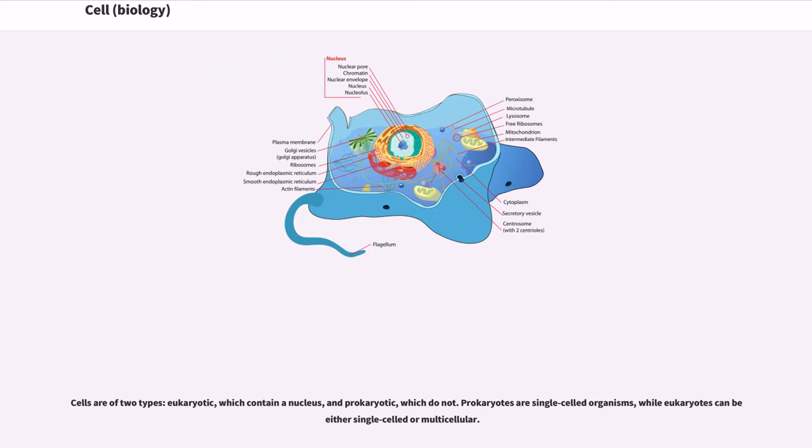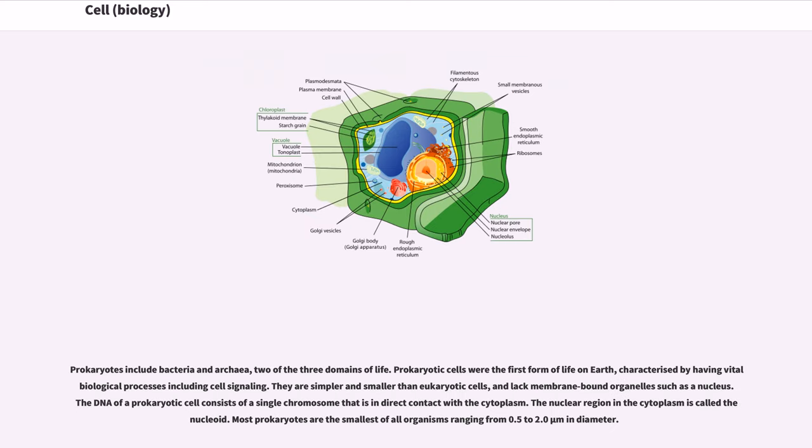Prokaryotes are single-celled organisms, while eukaryotes can be either single-celled or multicellular. Prokaryotes include bacteria and archaea, two of the three domains of life.